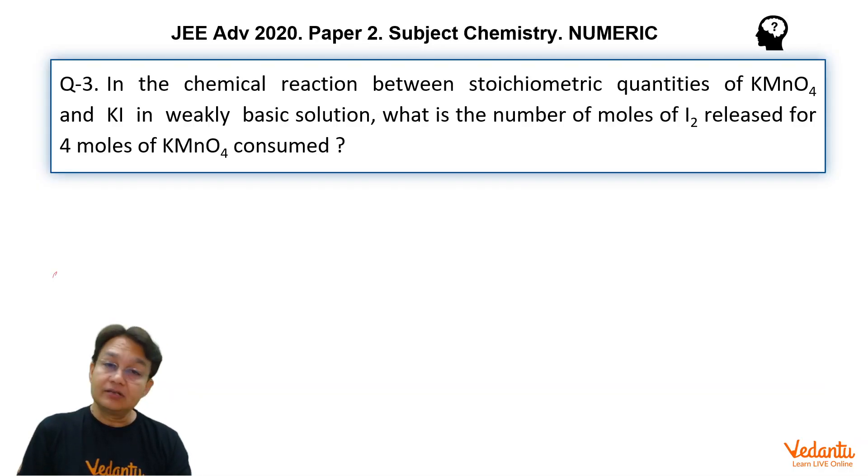The question is in a chemical reaction between stoichiometric quantities of KMnO4 and KI in weakly basic solution. What is the number of moles of I2 released for 4 moles of KMnO4 consumed?